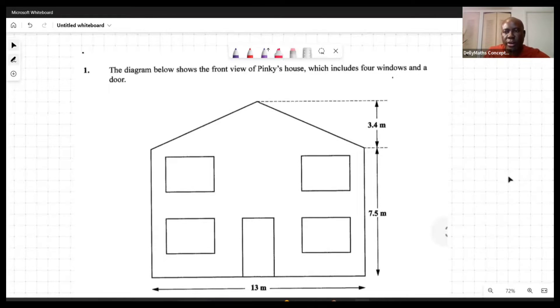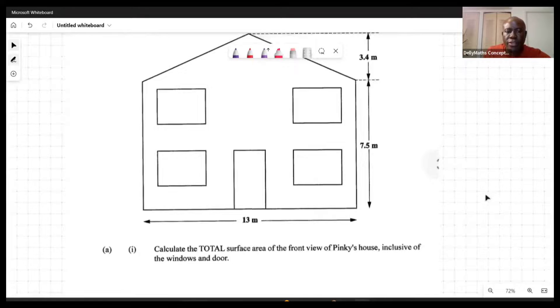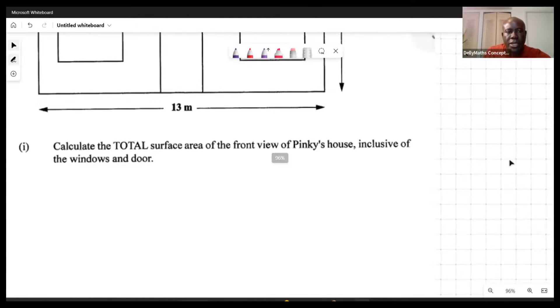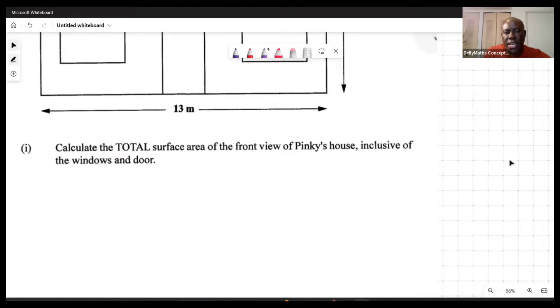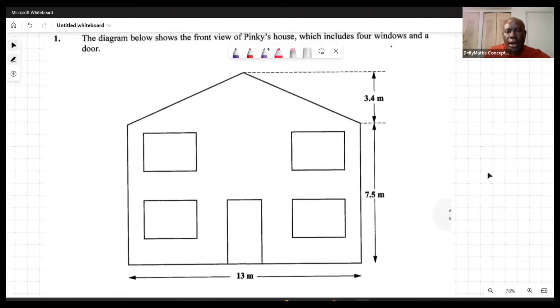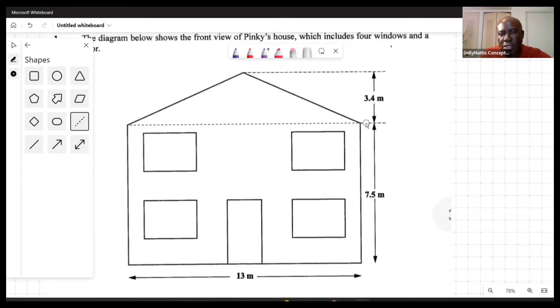So we're looking at it, four windows and a door. We're seeing everything clearly. The first question says calculate the total surface area of the front view of Pinky's house, inclusive of the windows and the doors. If I could just quickly cut this into two pieces, we're seeing that this front view of the house here consists of a rectangle and triangle.